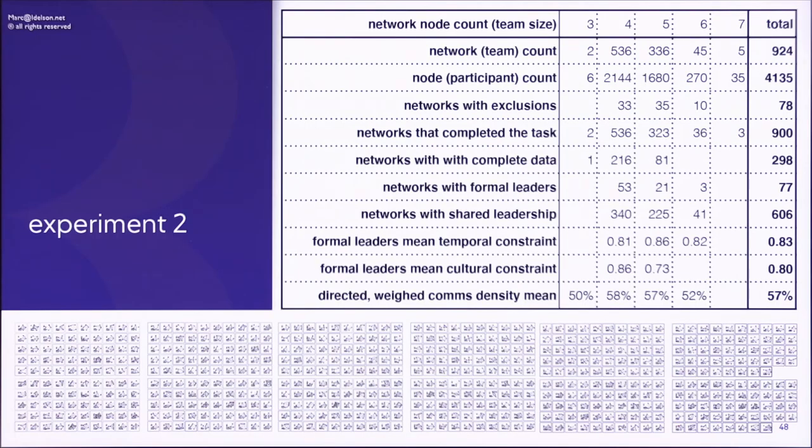So we inferred that cultural structural holes could predict the assignment of leadership roles in global virtual teams, that temporal structural holes would moderate the leader's plural or singular effectiveness, and finally that the work relationship structural holes would have a curvilinear effect on team task performance. And in this particular cohort, we had 924 teams and the most numerous teams actually had only four members. There were 536 of these.